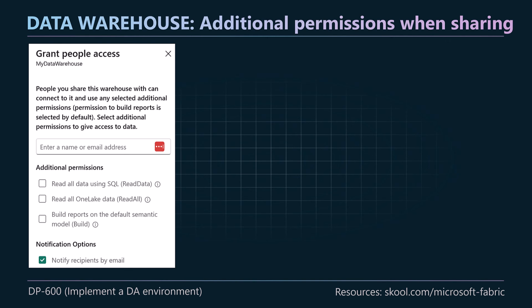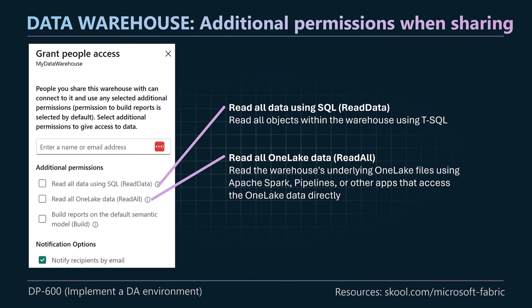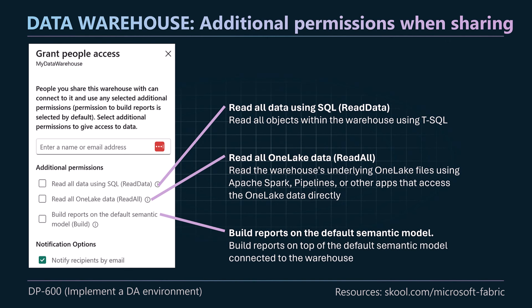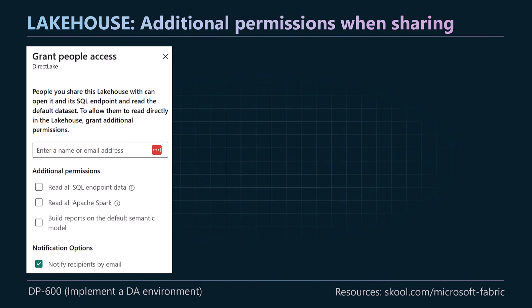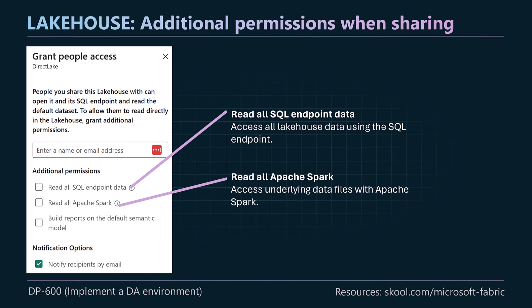When sharing a data warehouse, you get three additional permissions. Read all data using SQL allows people to read all objects in the warehouse using T-SQL. Read all OneLake data allows reading the underlying OneLake files using Spark, pipelines, and so on. Build reports on the default semantic model allows the user to build reports on the default semantic model only. For the lake house, these permissions are similar but worded differently: read all SQL endpoint data enables T-SQL on the SQL endpoint, read all Apache Spark enables notebooks and Spark code on that data, and build reports works the same way.